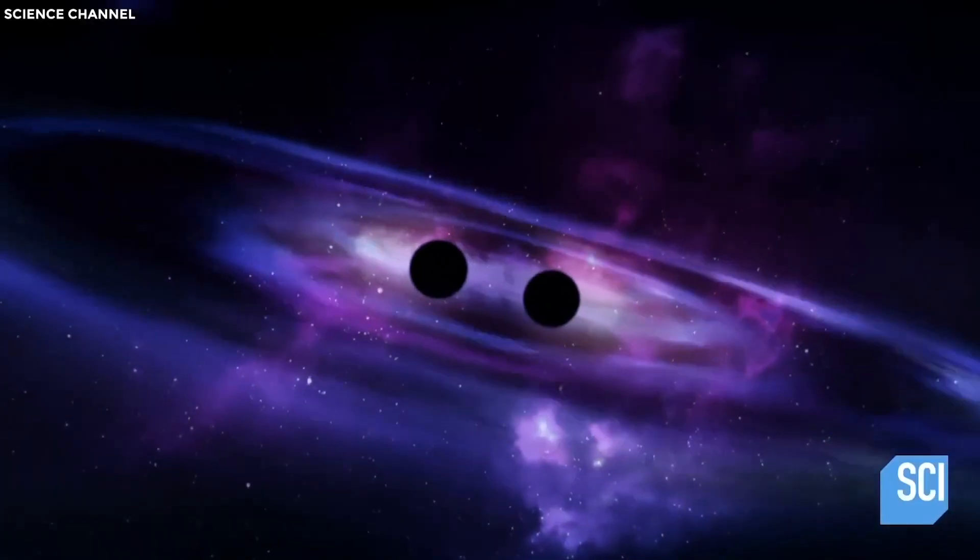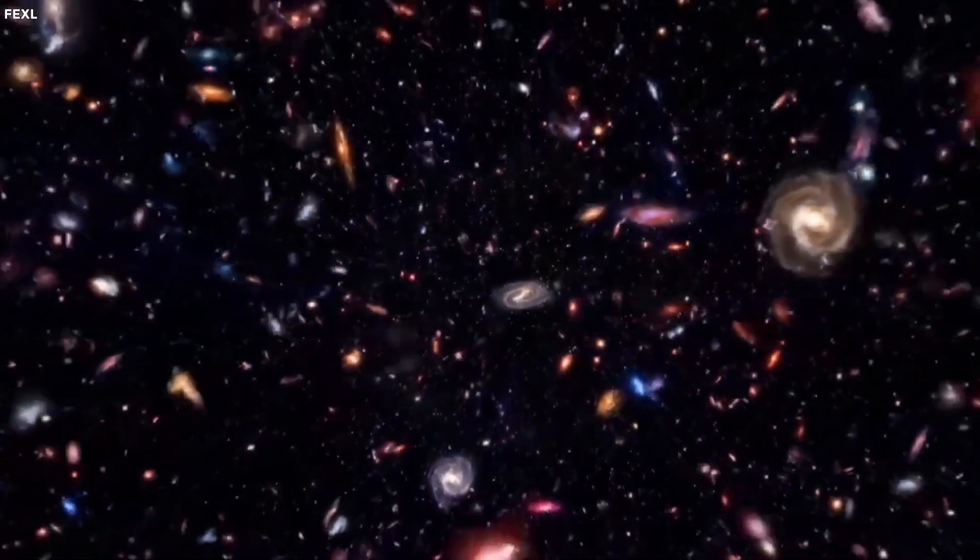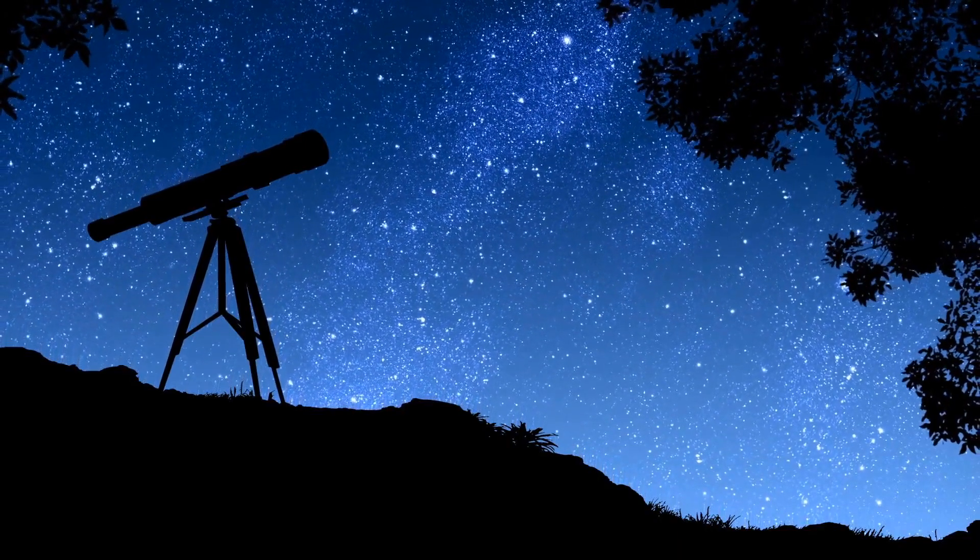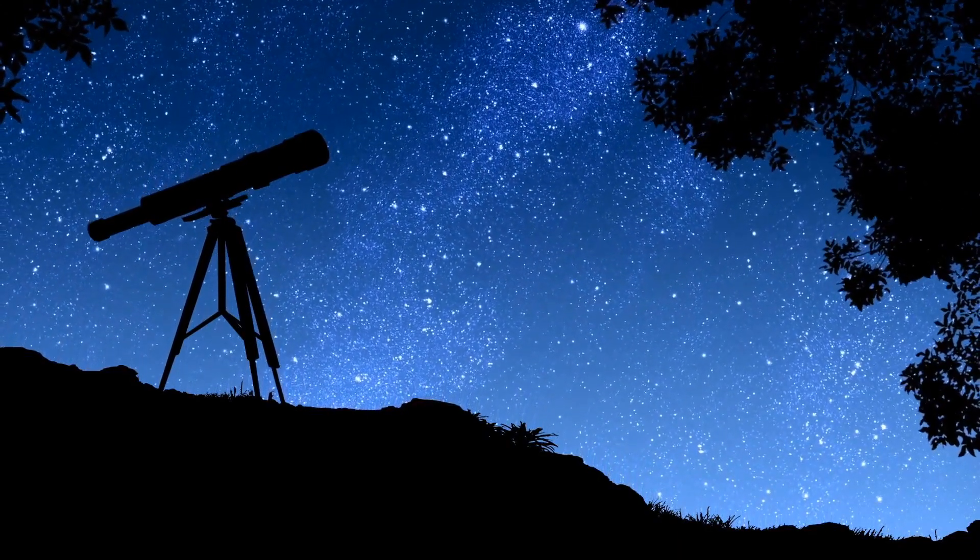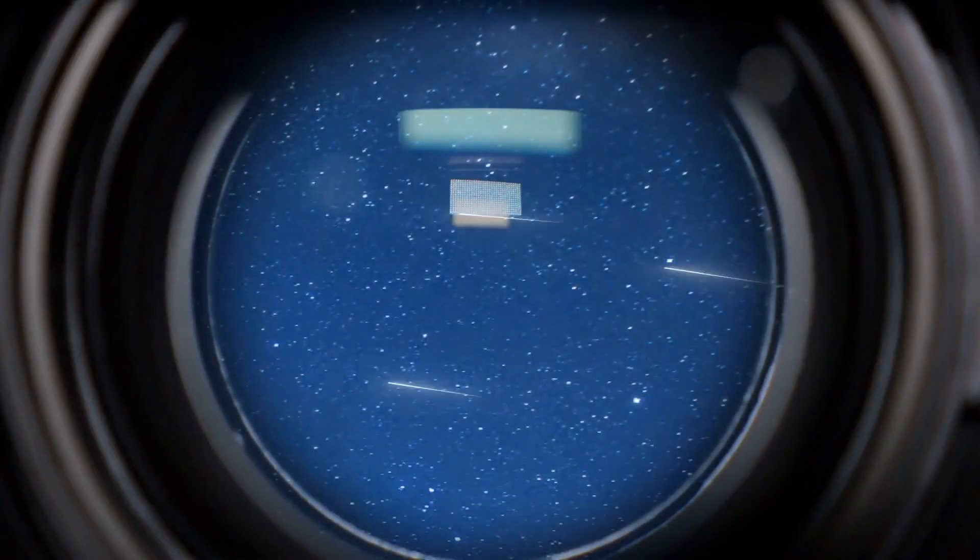Why can't we see the entire universe? Several factors contribute to this limitation. First, light takes time to travel through space. When we observe distant objects, we are seeing them as they were in the past, not as they are in the present. The farther an object is, the longer its light takes to reach us.